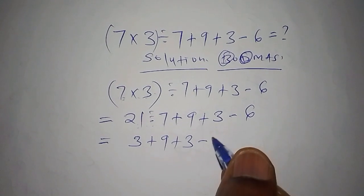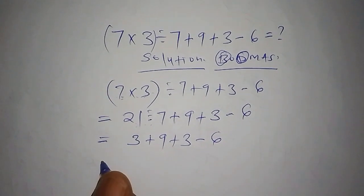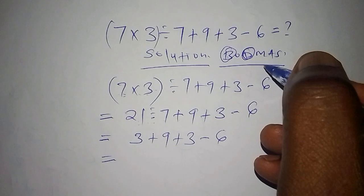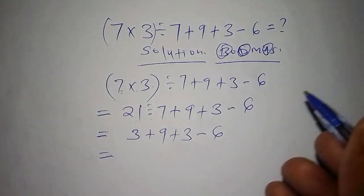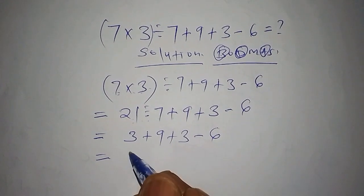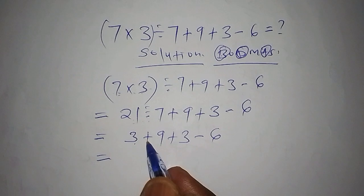So the next we have the A, so A simply means the addition. So we have the addition, so we're going to add 3 plus 9, which is 12, add to 3, subtract from 6.